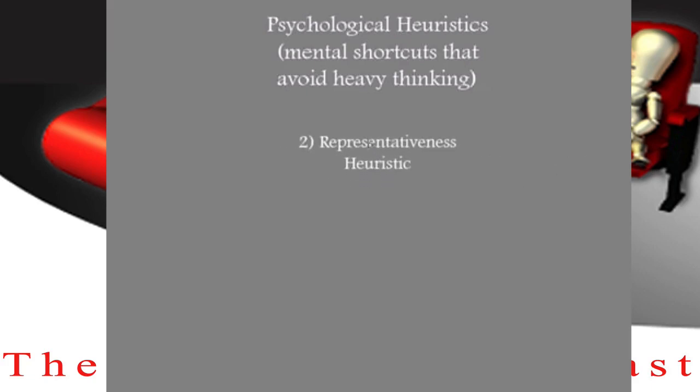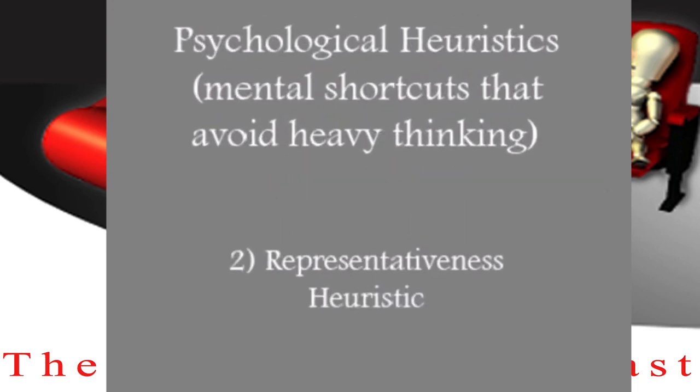That's different from number two: representativeness. There's a word that just doesn't help you at all. But the idea here is that if you're trying to figure out what something is like, you tend to think about things that you believe represent the whole category. So this has a lot to do with stereotyping. For example, suppose someone asked you about a fruit — what's a fruit? Well, here's my example.